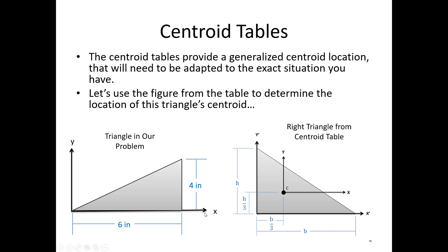The centroid location is B over 3 horizontally and H over 3 vertically. H over 3 is one-third of the height, so the centroid height would be four-thirds of an inch — that's our y bar. For the base, B over 3 is measured from the right angle. This triangle and the table triangle are mirror images of one another, so six over 3 is two inches back from the right angle, or equivalently four inches from the other side. So going four inches over and four-thirds of an inch up gives the centroid location.